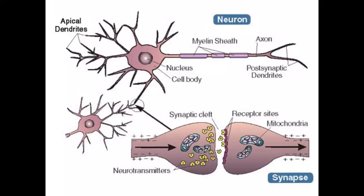These neurotransmitters act as ligands that trigger the ion-gated receptors on the next neuron. These receptors that are activated by the neurotransmitters open up the ion gates that in turn create an impulse that is carried throughout the next neuron cell, and the process goes on until it reaches an action center in the brain.